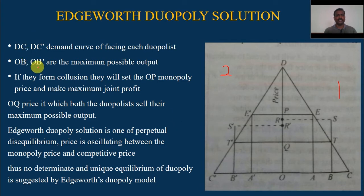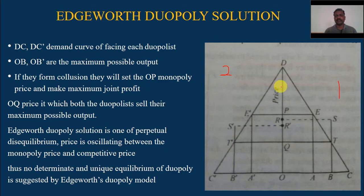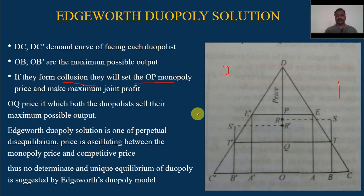OBE and OB1 are the maximum possible output that each producer — number 1 and number 2 — can sell. If they form a collusion, they will set the monopoly price OP.